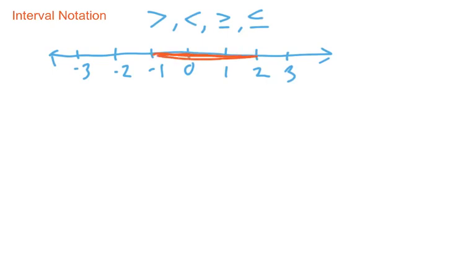So I'm interested in all of these values. That would include negative a half, it would include one, it would include positive a half, it would include 1.7. All those, in fact, infinitely many values along that number line between negative one and two.